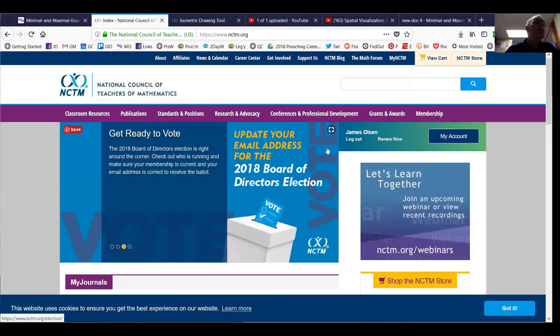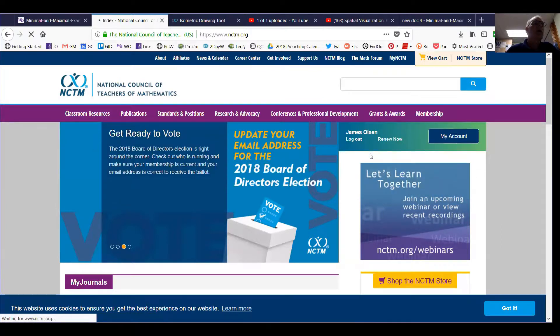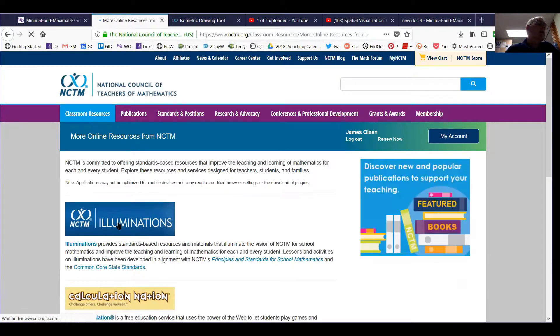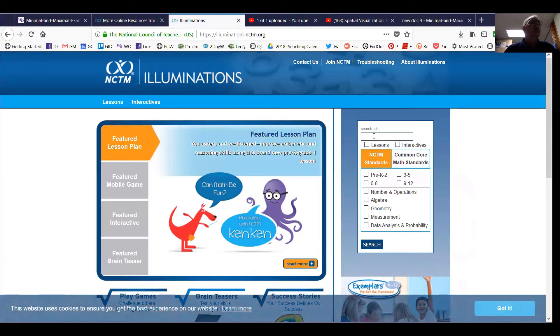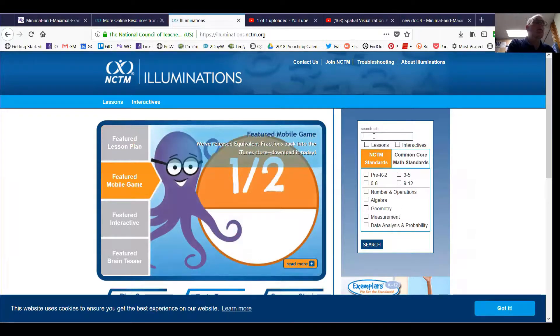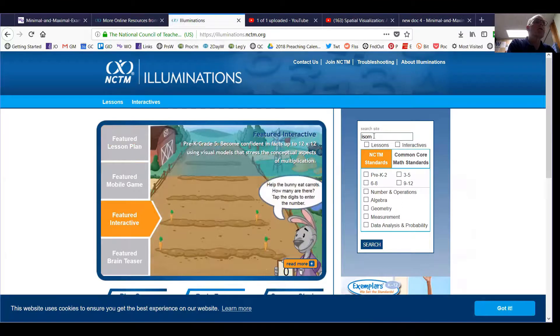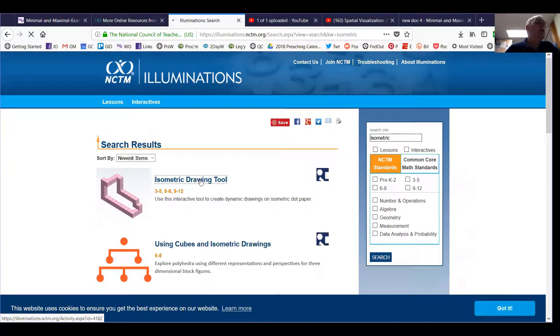So the first thing we're going to look at is the NCTM Illuminations. Here we are at nctm.org and if I hit classroom resources then illuminations and more online resources and then click illuminations. This is going to take me over to a place where I can search for the many activities and I'm going to type in isometric and click the isometric drawing tool.